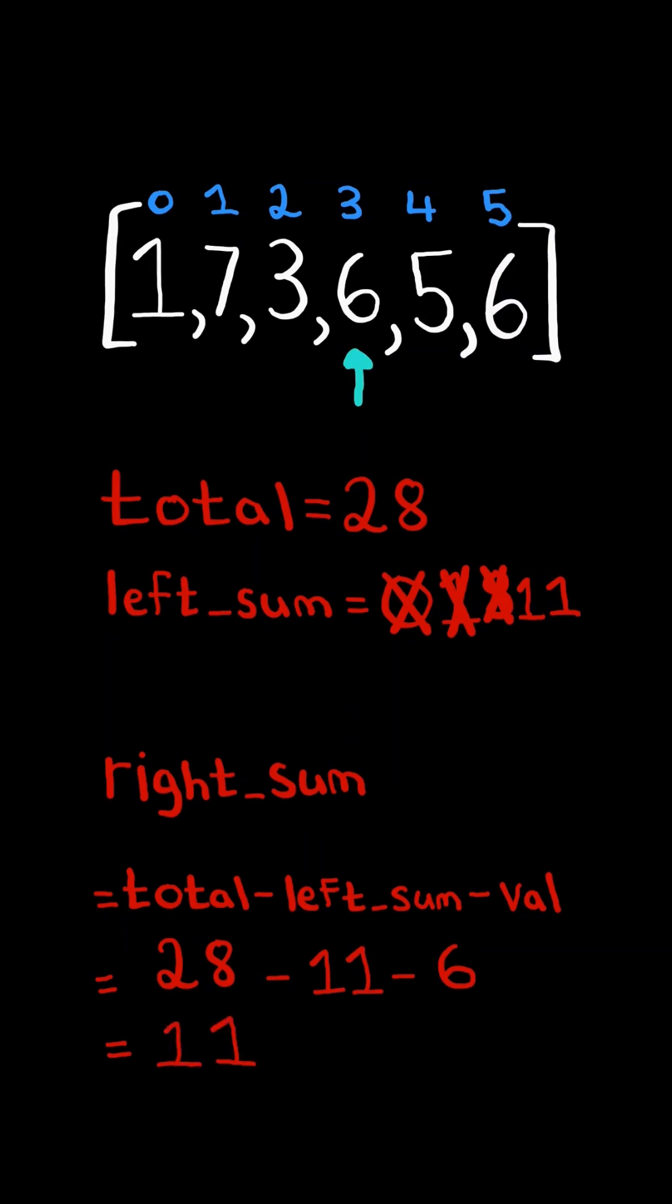We calculate right sum. It equals 11, but now notice the left sum does equal the right sum. So we stop here and return the pivot index, which is 3.